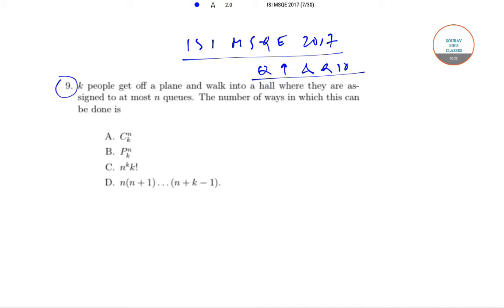In question number 9, there are k people which get off a plane and walk into a hall where they are assembled to at most n queues. The number of ways in which this can be done is: n choose k, n permute k, n to the power k into k factorial, or n into n plus 1 up till n plus k minus 1. These are the four options.